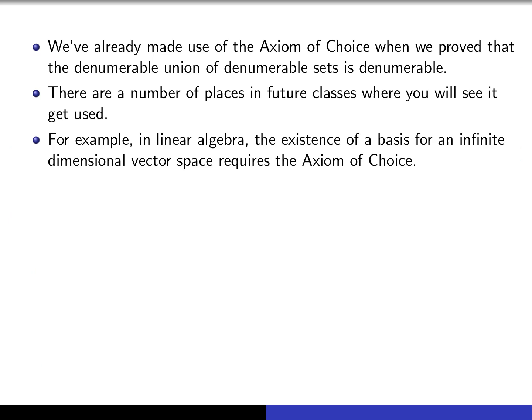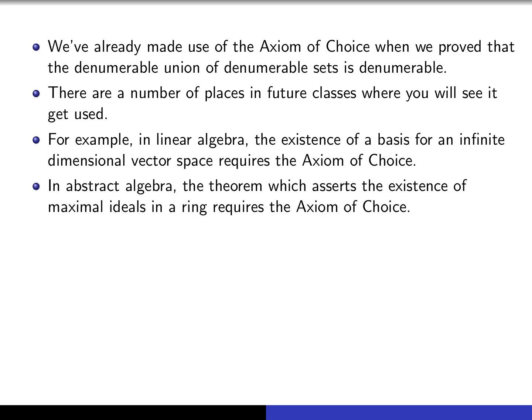If you were to actually see a proof of that fact, you would have to make use of the axiom of choice in order to do it. In an abstract algebra class where you consider an object which is known as a ring, and relative to that ring, you're going to want to assert the existence of something called a maximal ideal. In order to be sure that maximal ideals exist, you'll have to make use of the axiom of choice.